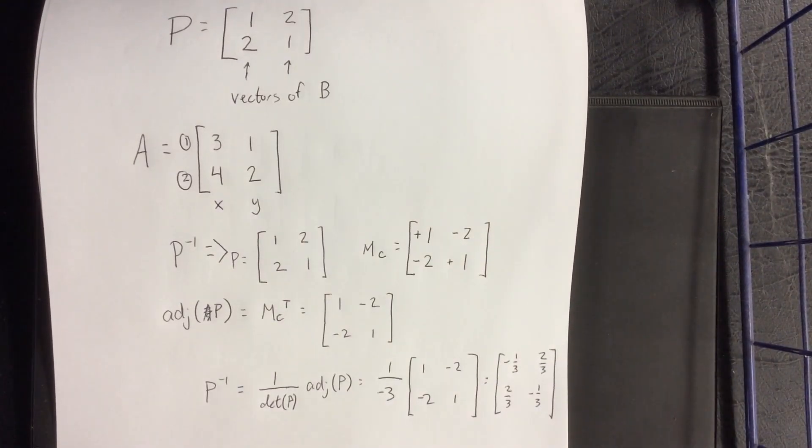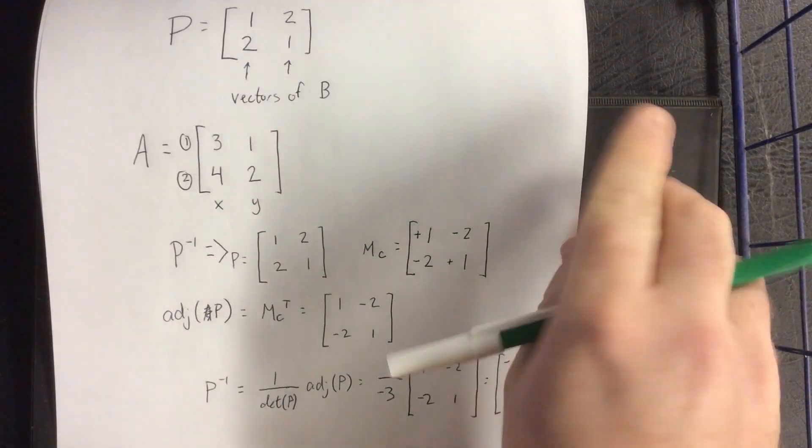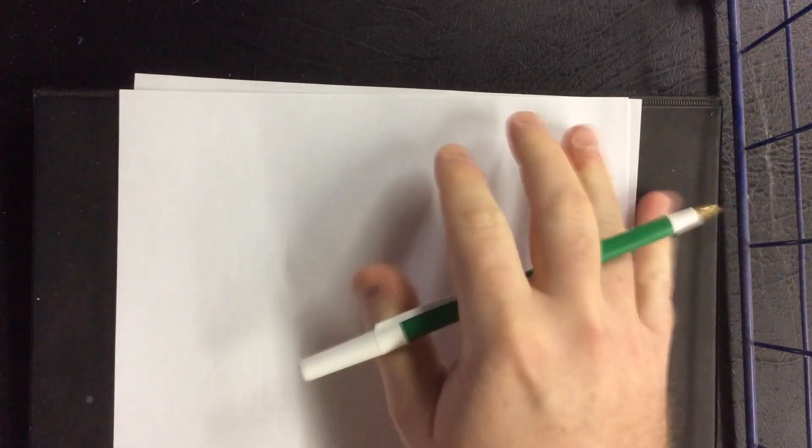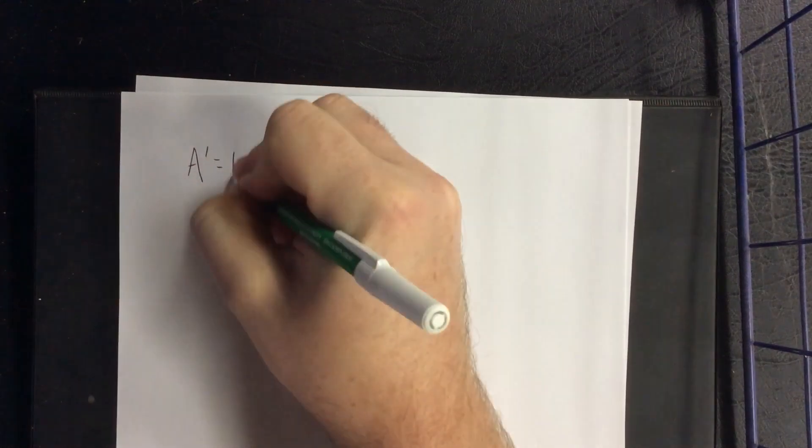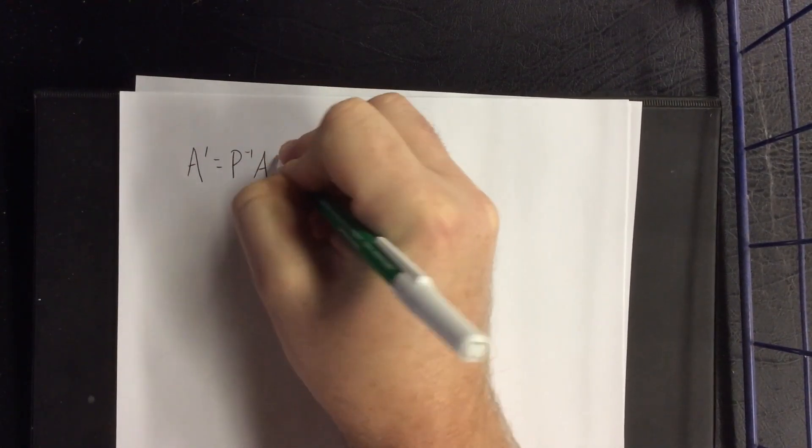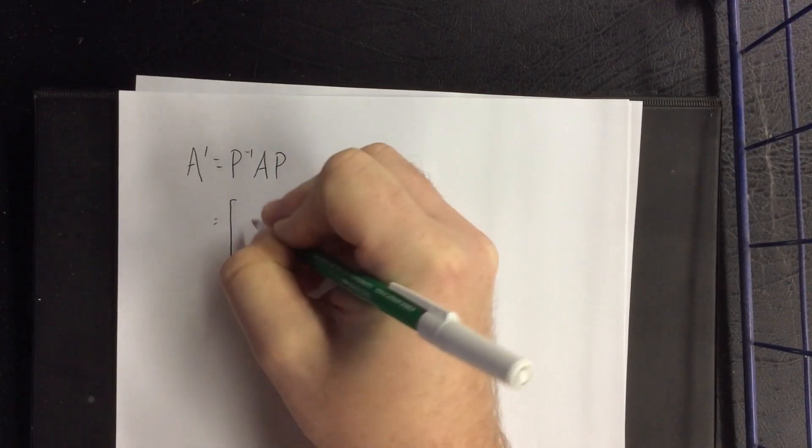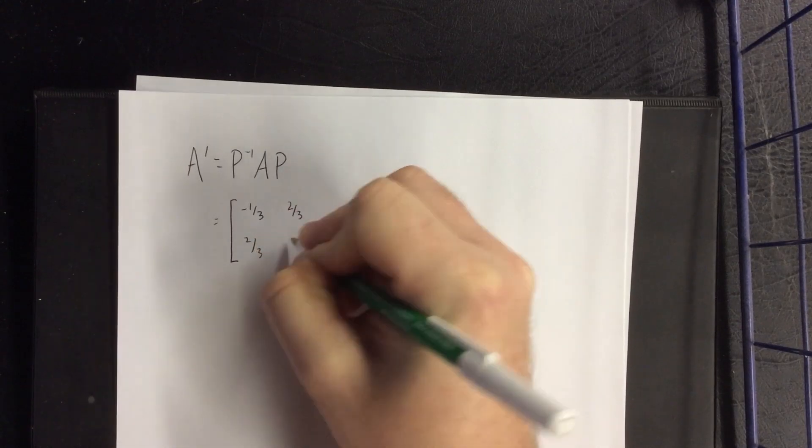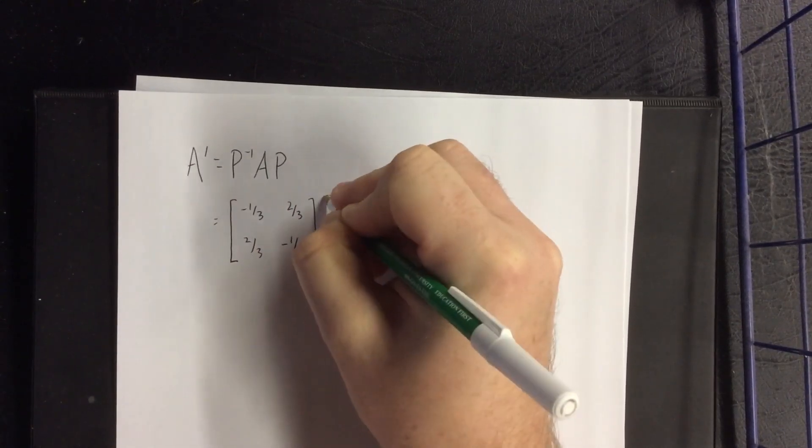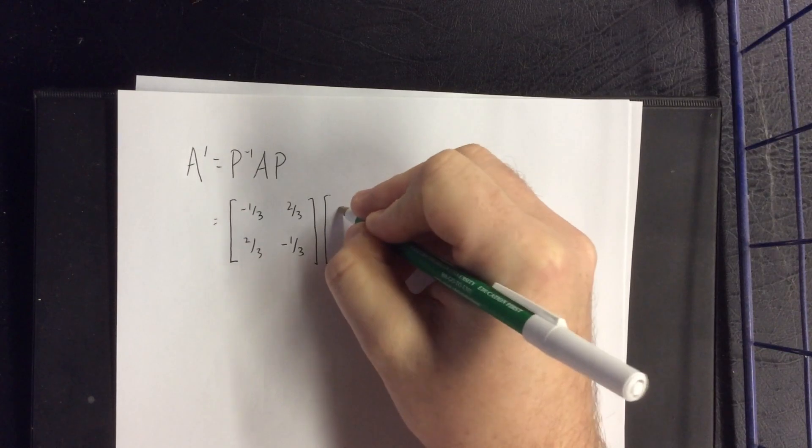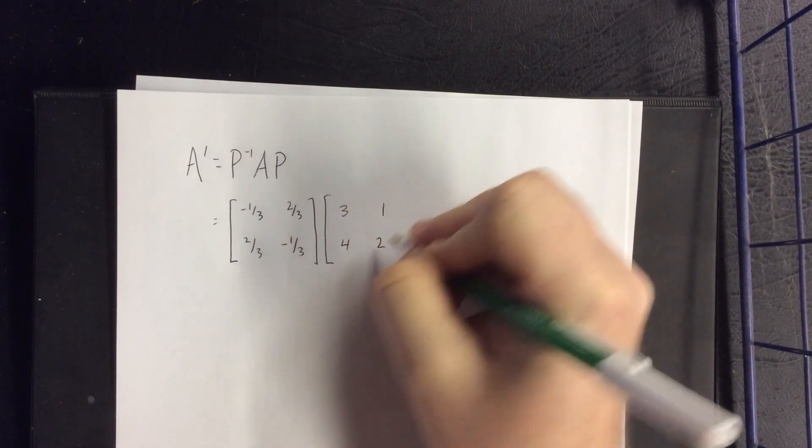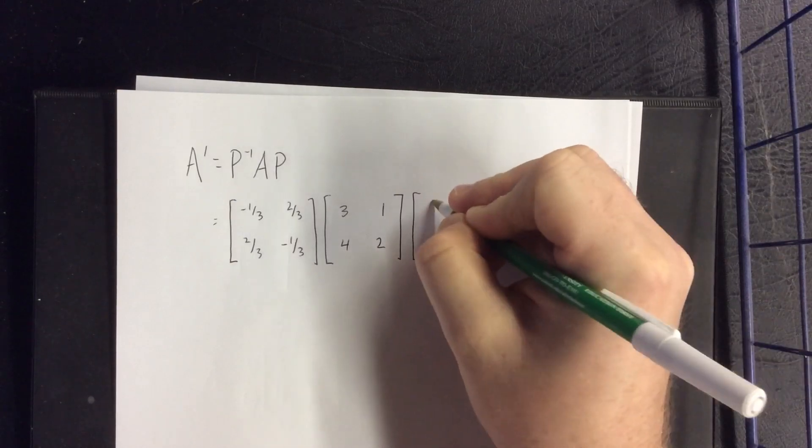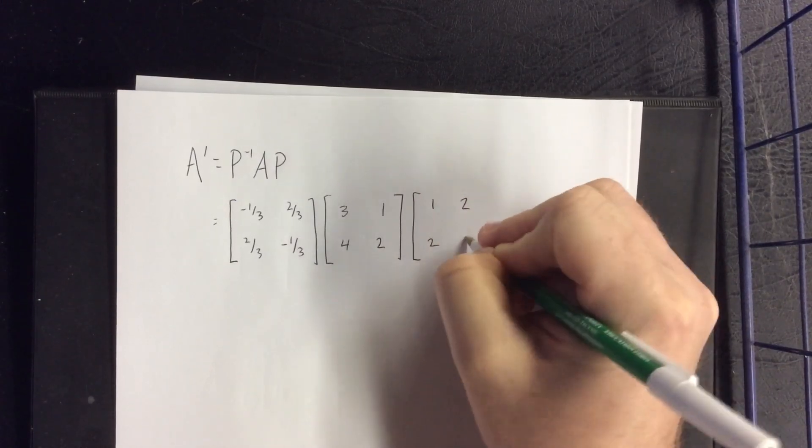Now for the fun part, we have P, we have A, we have P inverse. Next we get to multiply them in the appropriate order. So to reiterate what we're doing here, to get A', this is supposed to be P inverse times A times P. P inverse is [-1/3, 2/3; 2/3, -1/3]. The matrix A is [3,1; 4,2] and P is [1,2; 2,1].